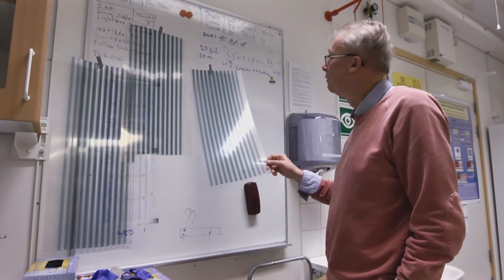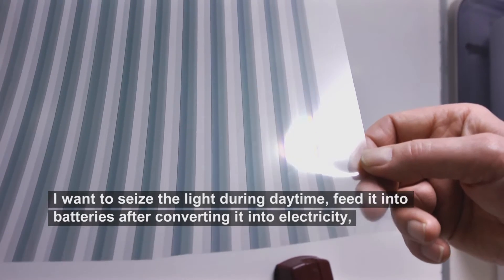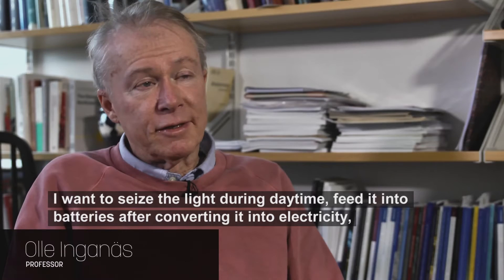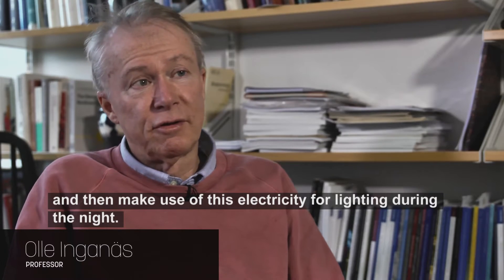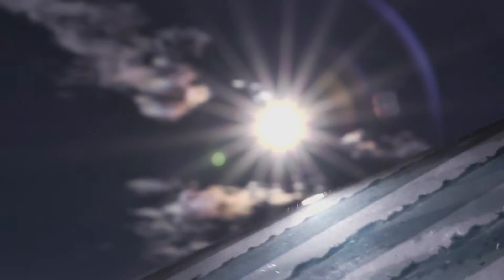Ola Ingenäs wants to seize the day his own way. It's about solar cells produced from organic, completely carbon-based materials, which are now entering the stage, approaching what has thus far been the only efficient option: silicon solar cells.